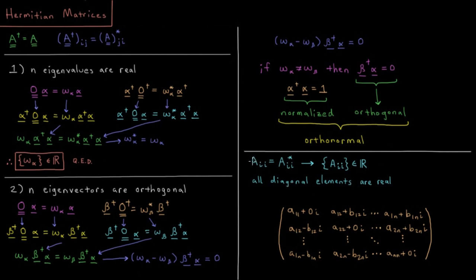All the diagonal elements in Hermitian matrices have to be real, because according to our definition, whenever we go to the opposite side of the diagonal we switch the imaginary part and keep the real part the same. So when we take the complex conjugate on the diagonal it has to give us the same number — the only way that can be true is if the imaginary part of the diagonal is always zero. In a Hermitian matrix, not only do off-diagonal elements mirror each other, but all diagonal elements must be real numbers as well.